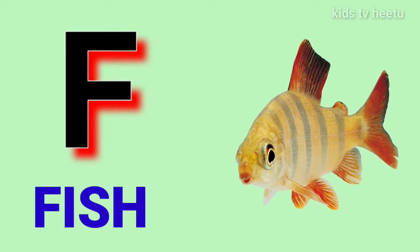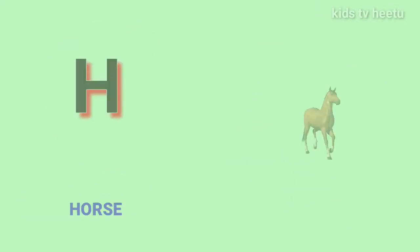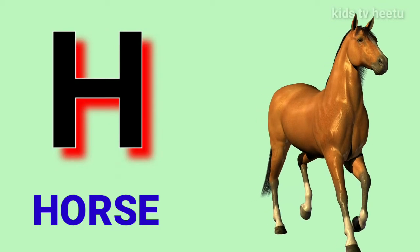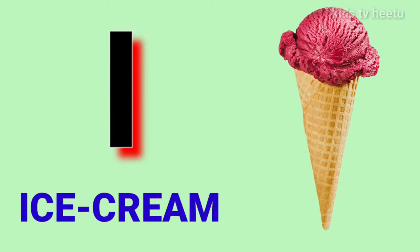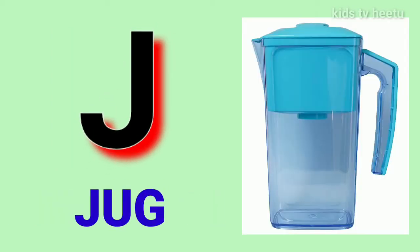L for peas, G for crabs, L for horse, I for ice cream, G for dog.